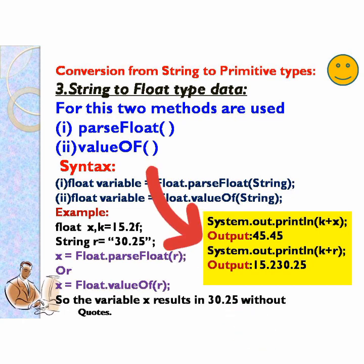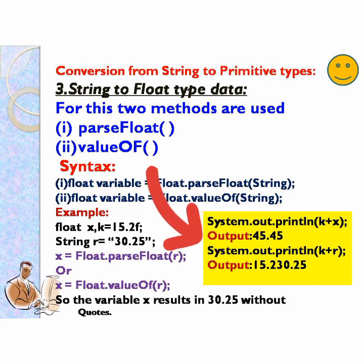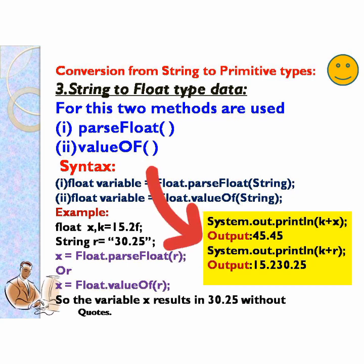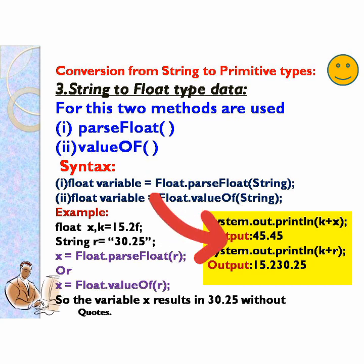System.out.println(k + x): k and x are both float, so you can add them and the answer will be a floating value — 45.45. If you type System.out.println(k + r), you will get the output in string format because k is float and r is string. If you add anything with a string, it will convert to string.